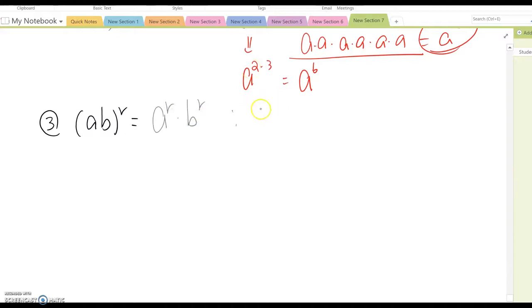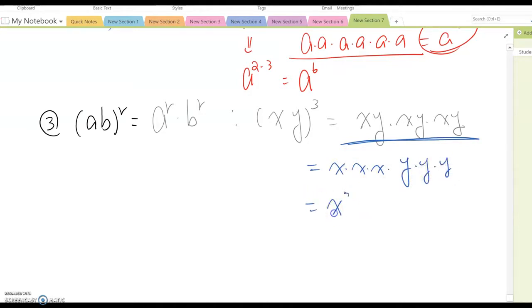Look at one example. Let's say X, Y to the 3rd power, which means you are multiplying X, Y, and X, Y, and X, Y. Now, we gather same term together. Then, this becomes X times X times X, and Y times Y times Y. So, become X cubed and Y cubed. Shortcut: distribute this power to both X and Y. Then, become X cubed and Y cubed.